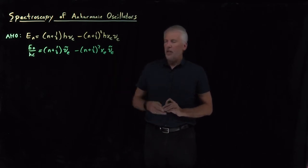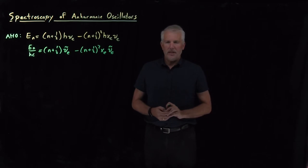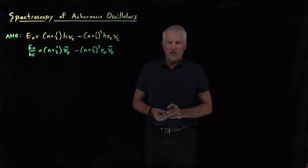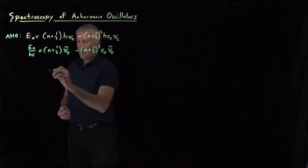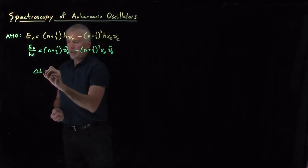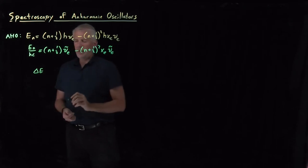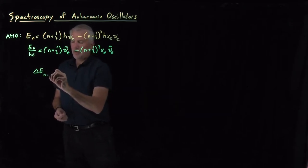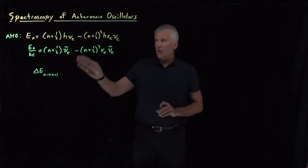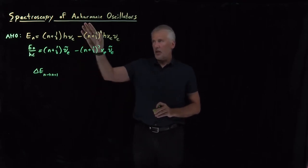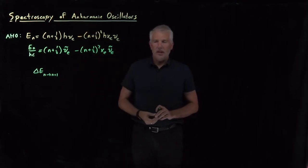This equation is going to help us understand why diatomic molecules have the spectra that they do in the infrared portion of the spectrum. To understand why, let's calculate the difference in energy when we make a transition from one level to another in a diatomic molecule behaving like a harmonic or an anharmonic oscillator.